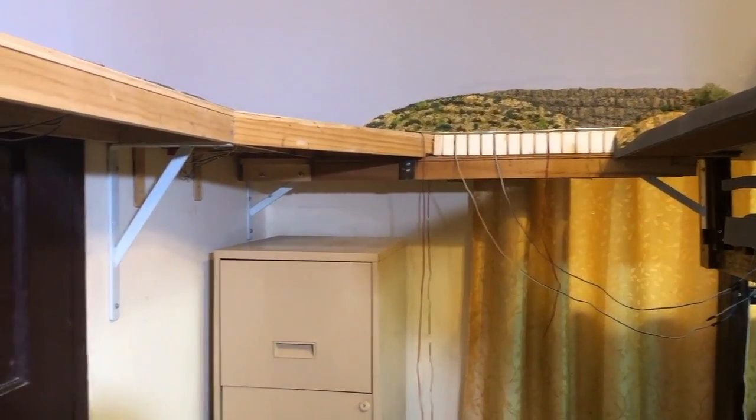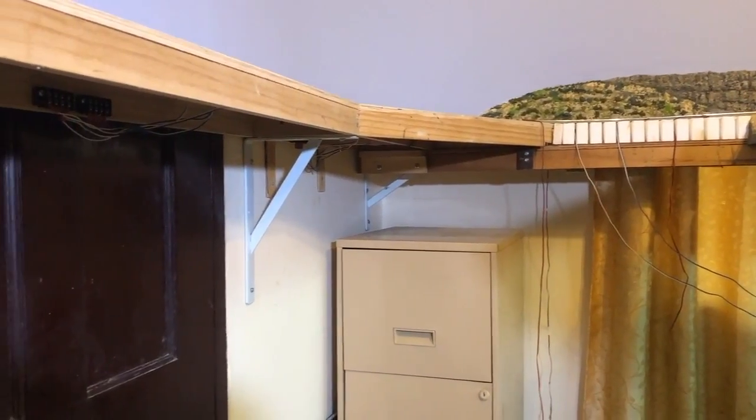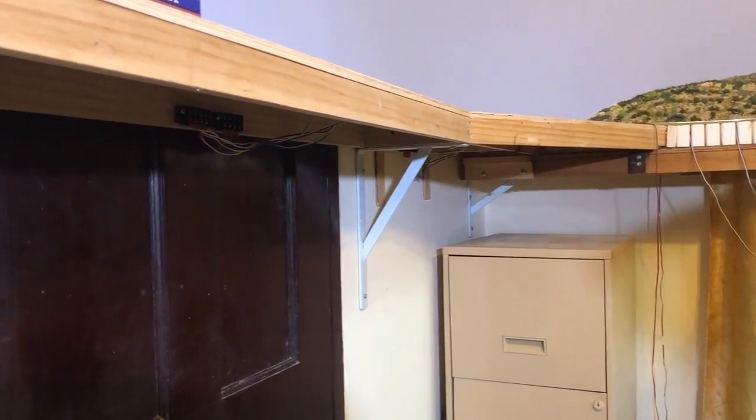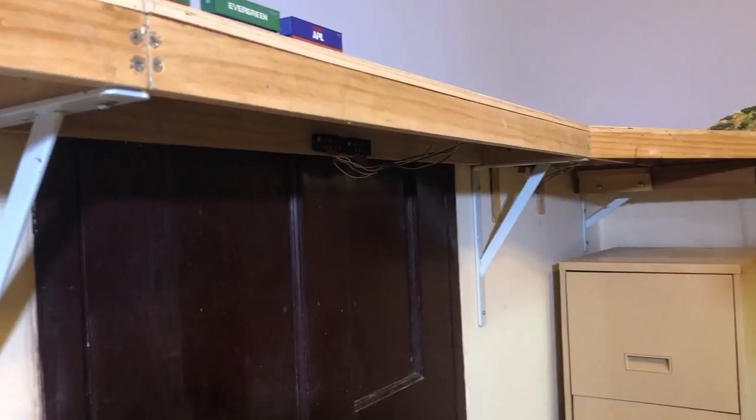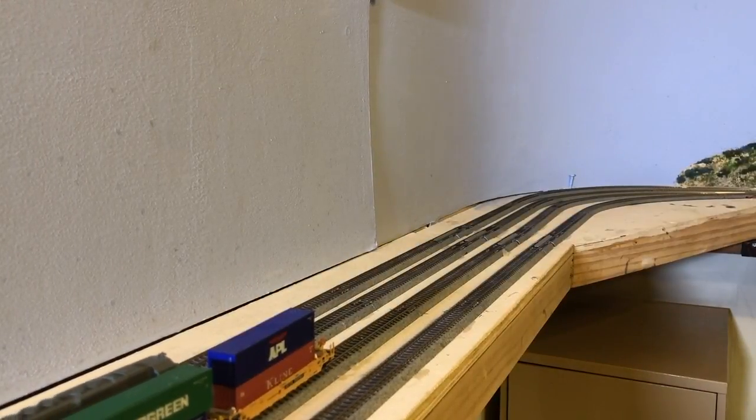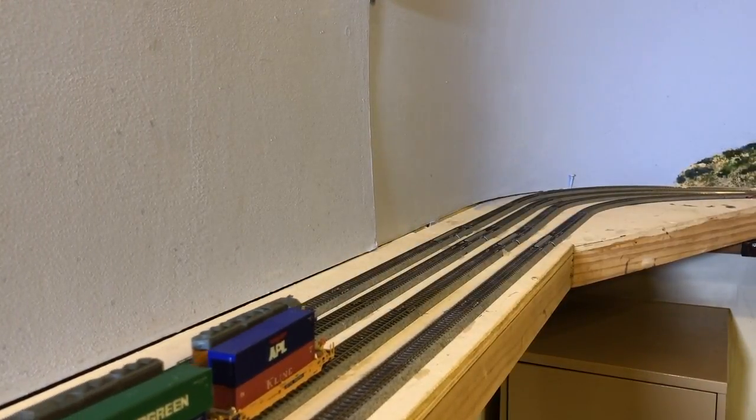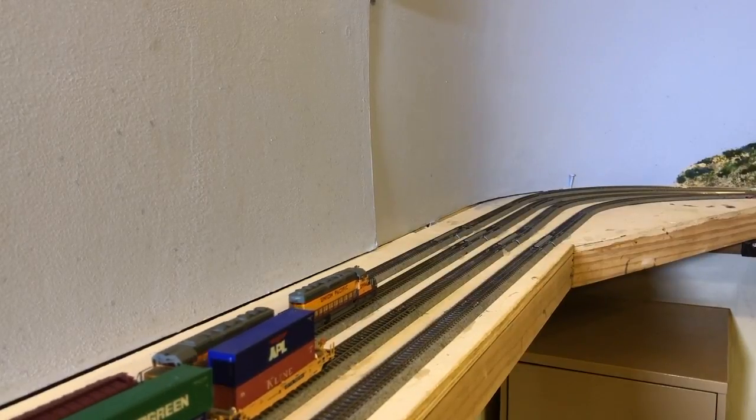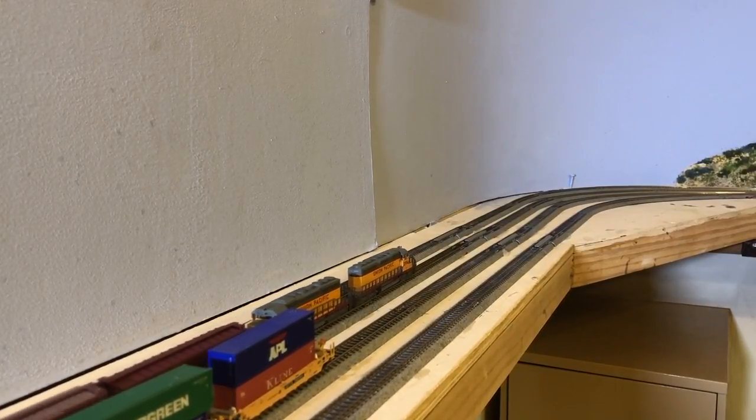The bench work on this part of my layout is only eight inches wide and is supported by strong L brackets rather than legs. There is a lift-out section for access to the closet. Those two SD40-2s now depart Pocatello heading back to Evanston having picked up a string of boxcars.